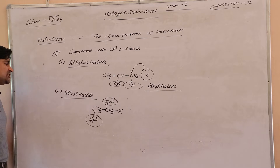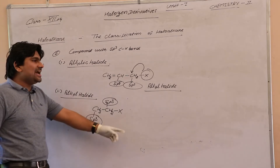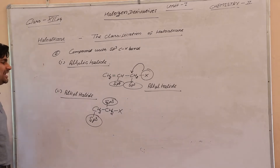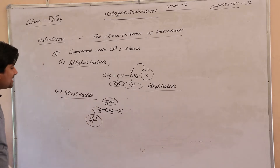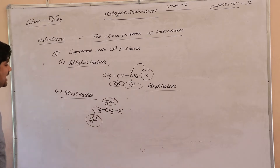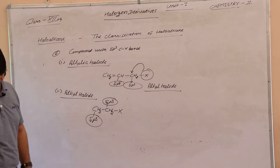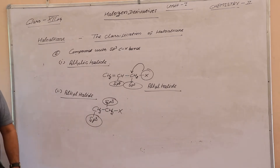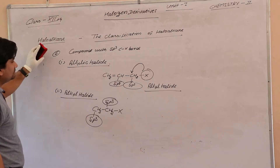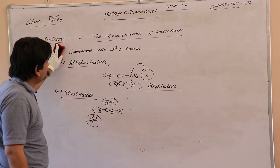Next is alkyl halide. What is alkyl halide? The halogen atom is directly attached with the SP3 hybridized carbon atom. The compound is called alkyl halide.